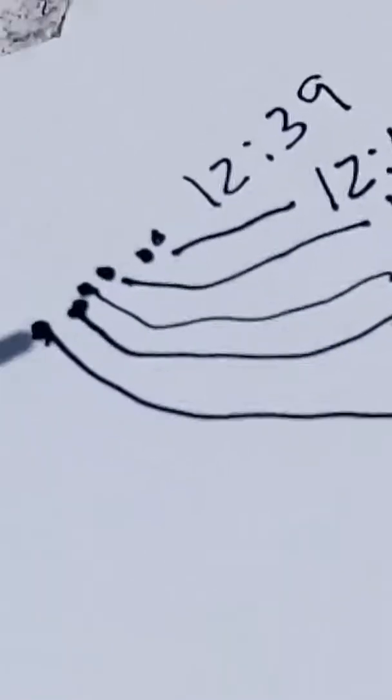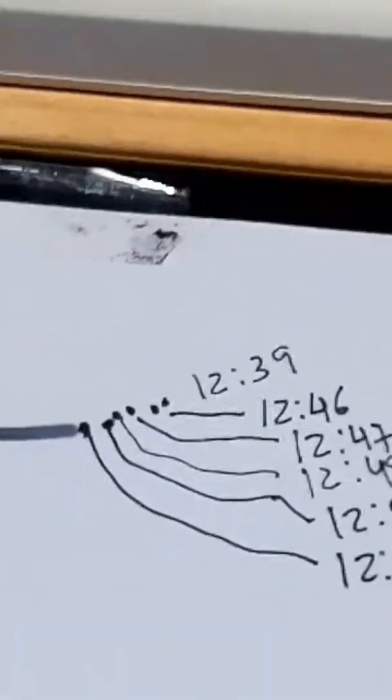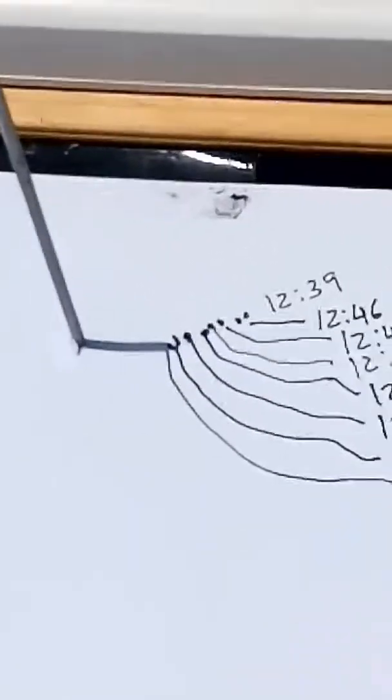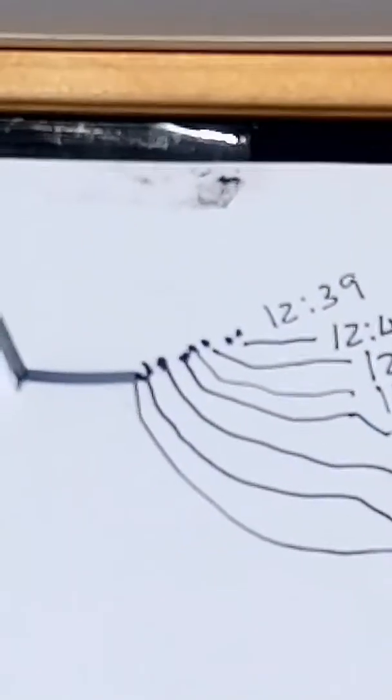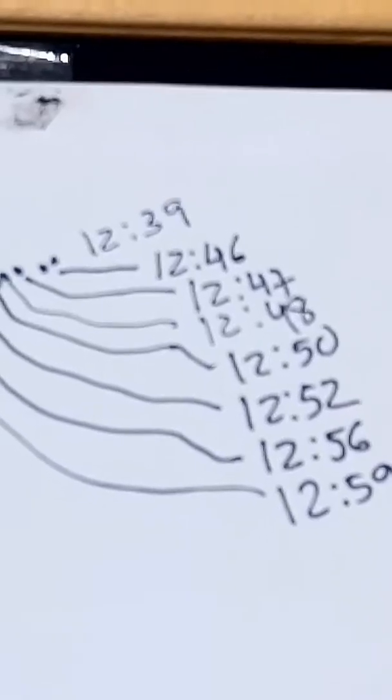Now check out the sun is doing a type of zigzag from 12:39 to 12:52. Look at the zigzag.